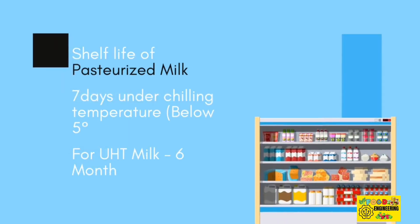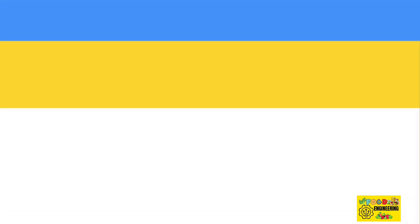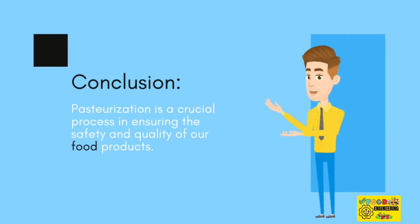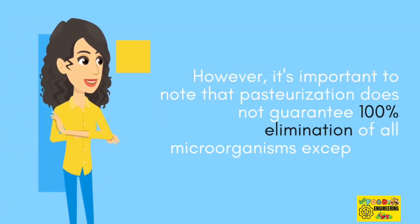Shelf life of pasteurized milk: 7 days under chilling temperature below 5 degrees Celsius; for UHT milk, 6 months. In conclusion, pasteurization is a crucial process in ensuring the safety and quality of our food products. However, it's important to note that pasteurization does not guarantee 100% elimination of all microorganisms, except UHT.